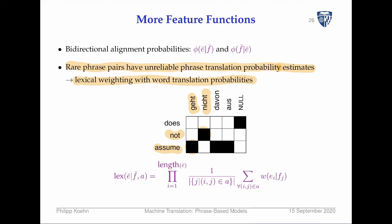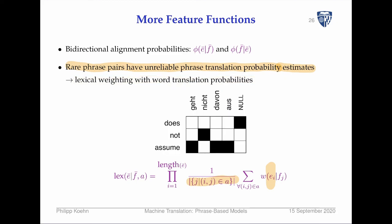Here we use a version where we still explain each English word, but if there are multiple English word correspondences, we average over them. So this is just averaging the possible English word translations. In this case 'assumes' is explained by three different foreign words — 'geht,' 'davon,' and 'aus.' These are the ones we sum over here, each giving a probability.